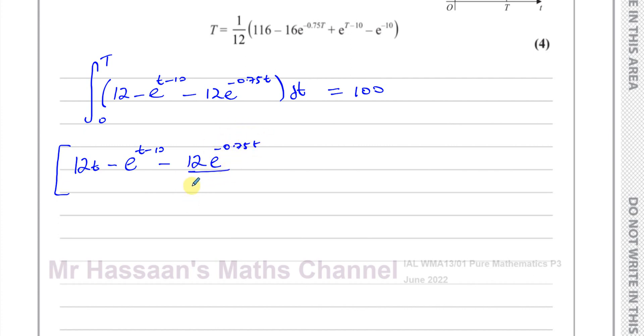We stop there. We don't have plus C because it's a definite integral. We have limits zero and T, and that's going to give us 100. So I'm going to just rewrite this in a more friendly way. I've got negative 12 divided by negative three quarters.